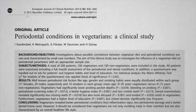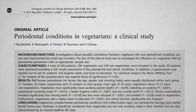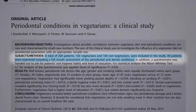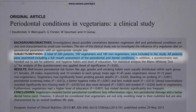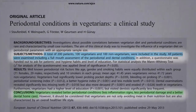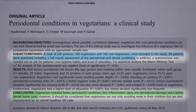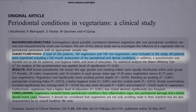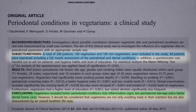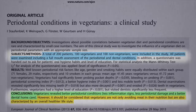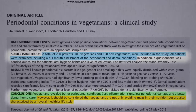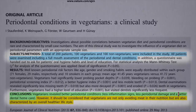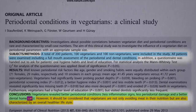What about periodontal conditions in vegetarians? A hundred vegetarians versus non-vegetarians were studied, and those eating vegetarian did have better periodontal conditions — less inflammation signs, less periodontal damage, and better dental home care. However, it should be considered that vegetarians may not just be avoiding meat, but are healthier in other ways, like better dental home care.